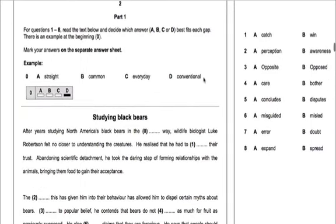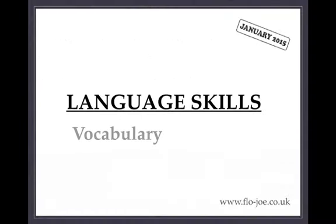As you can see there is an example at the top with the highlighted word 'conventional' being the missing word. The main focus in the multiple choice cloze is vocabulary. Various aspects of vocabulary are likely to be tested but in general you should focus on learning chunks or set expressions rather than simply individual words.